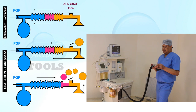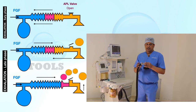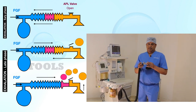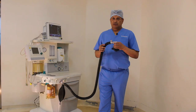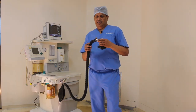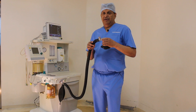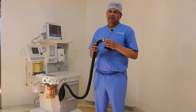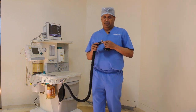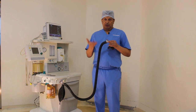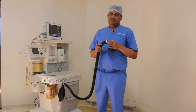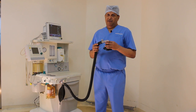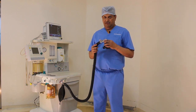This makes the Mapleson A system the most efficient system for spontaneous ventilation. Studies show that the fresh gas flow requirement during spontaneous ventilation is only the alveolar ventilation. To be on the safe side, we use minute ventilation as the fresh gas flow requirement for the Mapleson A system during spontaneous ventilation.